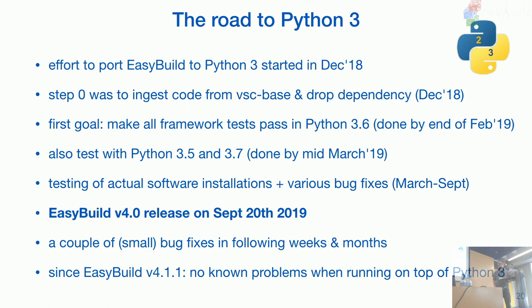We had an EasyBuild 4 release supporting Python 3 in September 2019. When people started using it on Python 3 a few more small bugs popped up, which were fixed in the weeks and months after. With the 4.1.1 release done earlier this month, there are no known issues on top of Python 3 anymore. It's pretty stable. We also run regression tests on both Python 2 and Python 3, so we have a good idea of what's working.